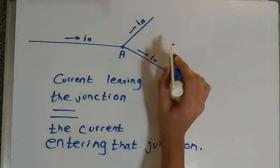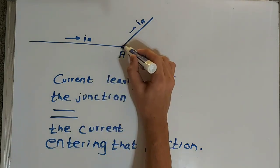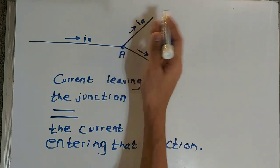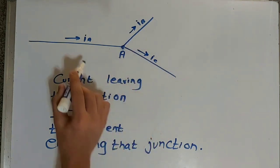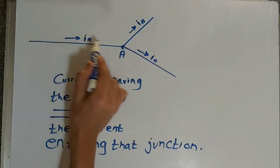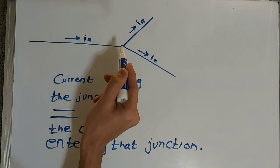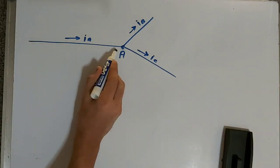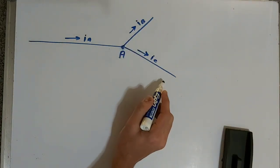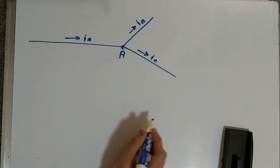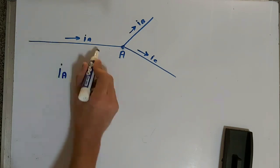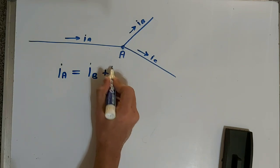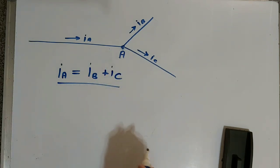So the current leaving the junction — in this case IB and IC are going away from the junction, meaning they are leaving it, and IA is the current entering the junction towards point A. Mathematically, the current entering the junction equals the current leaving: IA equals IB plus IC. This is the equation we form with Kirchhoff's current law.